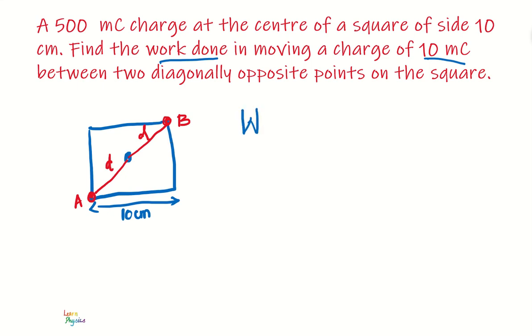We know the work done equals Q times the potential difference between the points, VB minus VA.